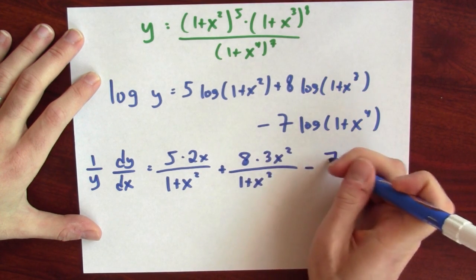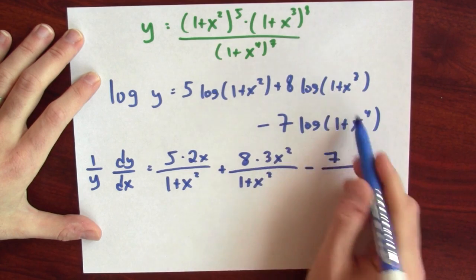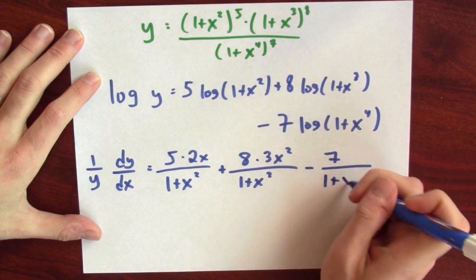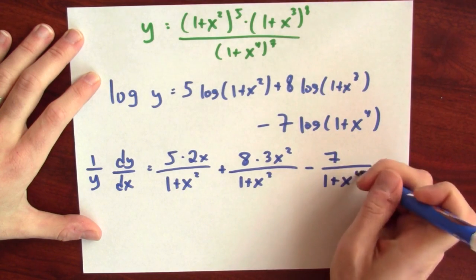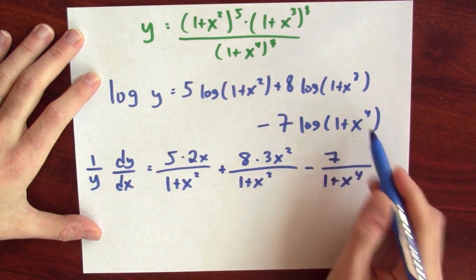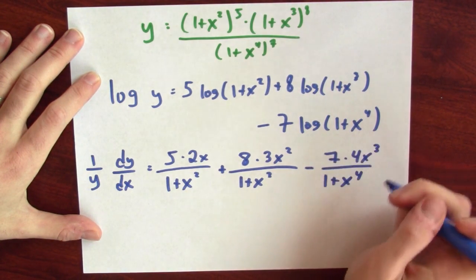Minus 7 over, derivative of log is 1 over the inside function, 1 + x⁴, and the derivative of 1 + x⁴ is 4x³.